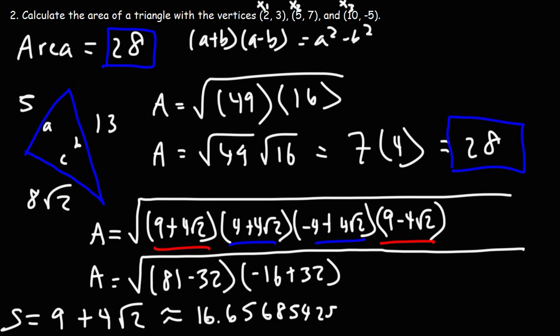We get the same answer of 28 square units. As you can see, using matrices is a lot easier. So if you want to calculate the area of a triangle given the vertices, the best way is to find the determinant of the 3 by 3 matrix and divide that by 2. That will give you the area of the triangle.